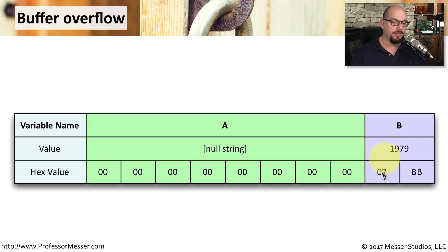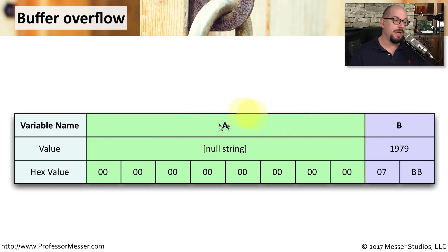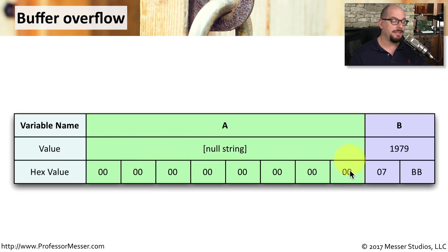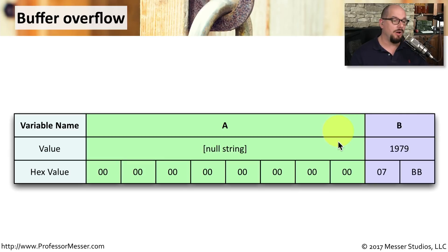If we look at the hex value of variable B, it's 0x07BB. But the bad guys have realized the developer is not performing a bounds check for variable A. And not only can you write 8 bytes into A, you can write more than 8 bytes, causing a buffer overflow.